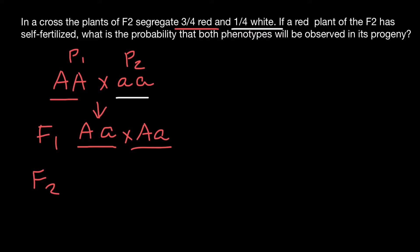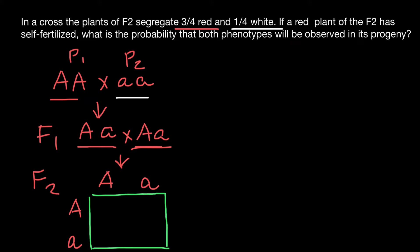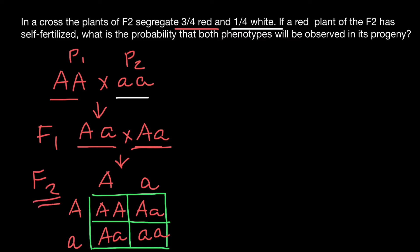In F2 generation, we get the following genotypes and phenotypes. Both parents are of the same genotype, so let's build a simple Punnett square. We are going to see in F2: capital A capital A, capital A small a, and small a small a. In F2 generation, we see three genotypes but two phenotypes. The two dominant genotypes produce plants with red pigment, and the homozygous recessive genotype produces flowers with white pigment. The ratio of phenotypes is going to be three to one.